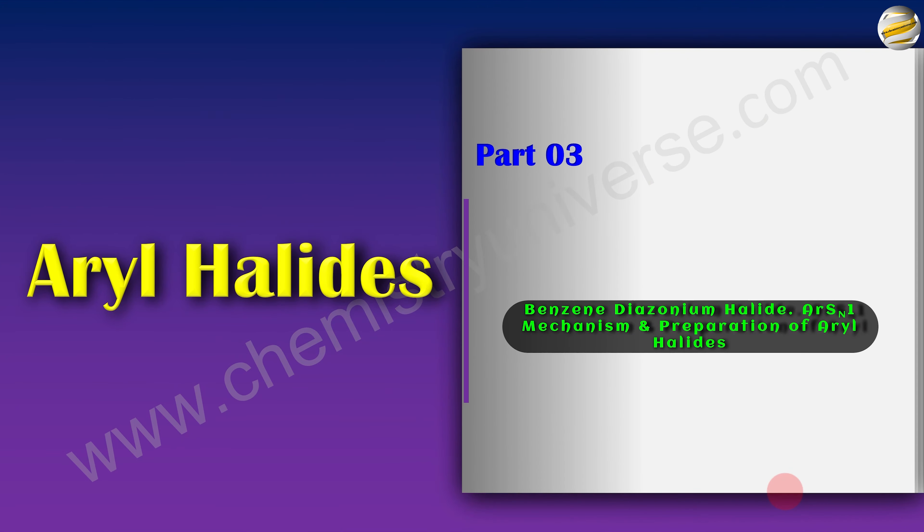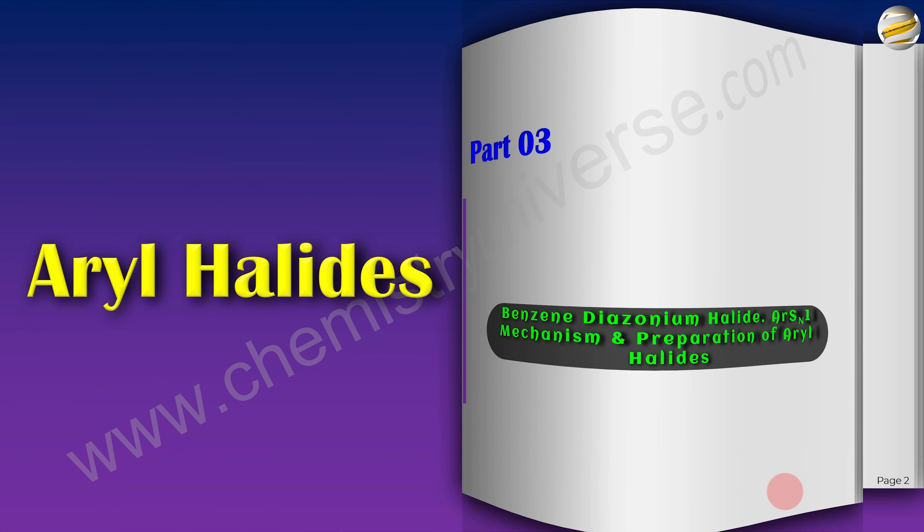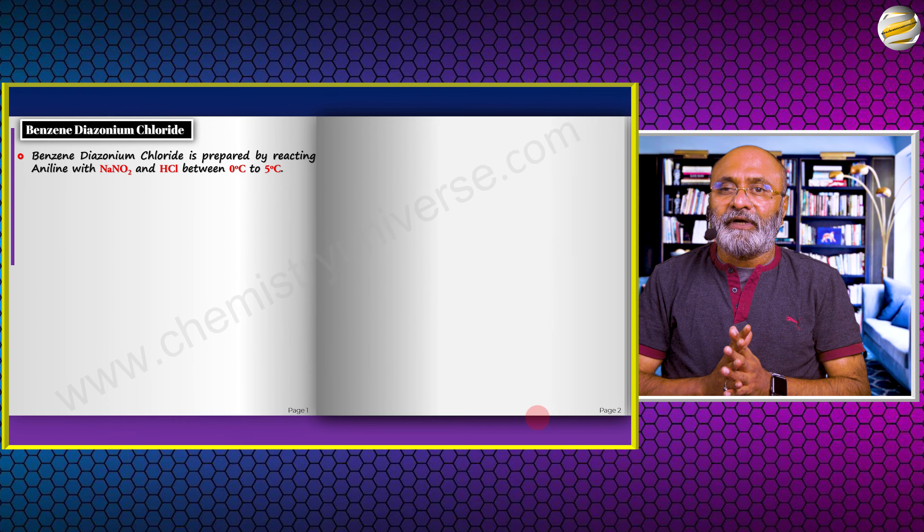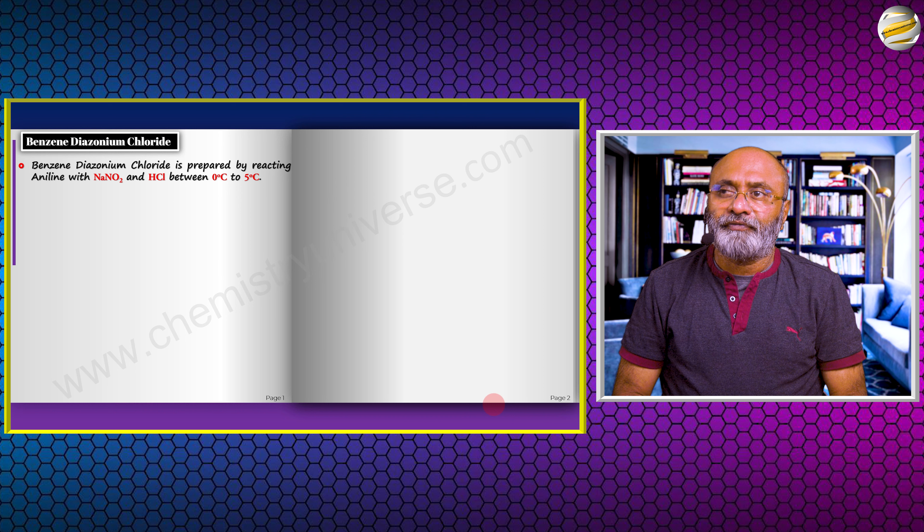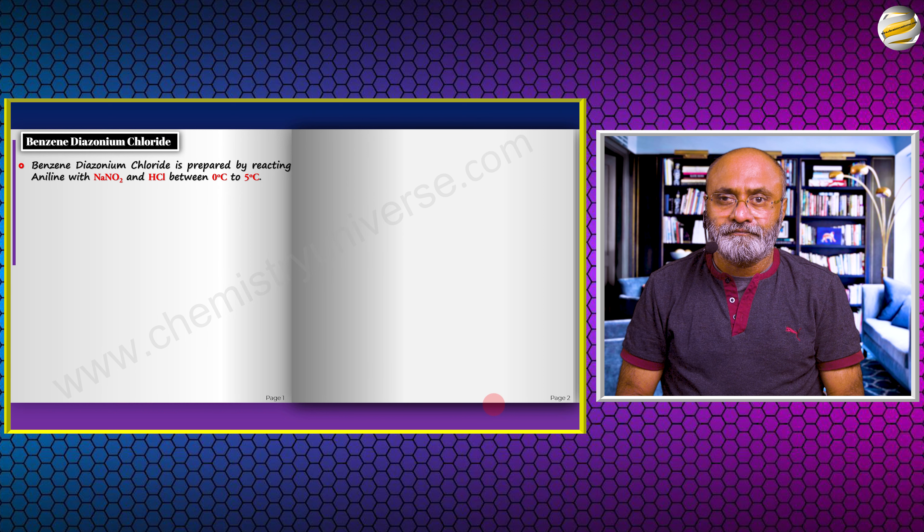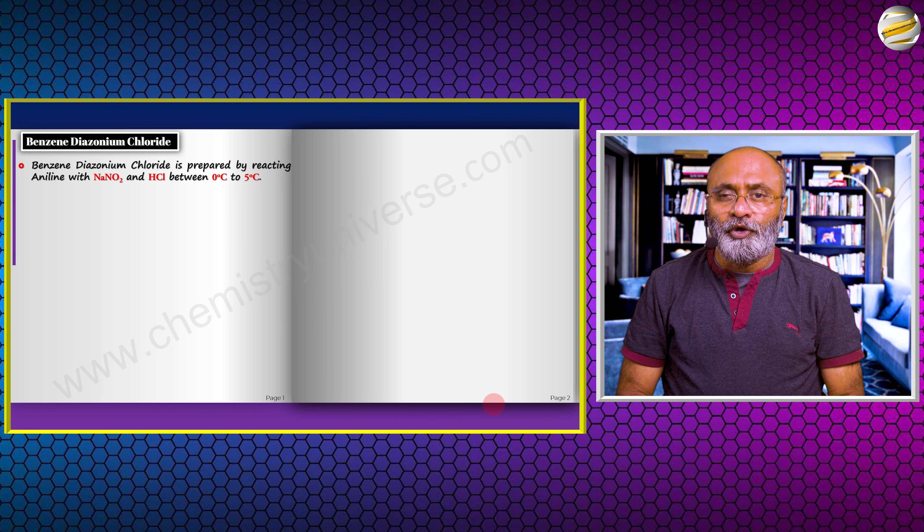This is part three, the last part of aryl halides, titled ARSN1 with benzene diazonium halides. The first one is benzene diazonium chloride. We will first understand how it is prepared. Benzene diazonium chloride is prepared by reacting aniline with NaNO2 and HCl between 0 to 5 degrees Celsius.